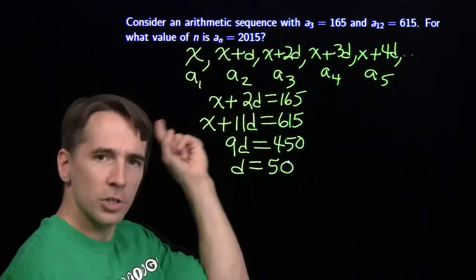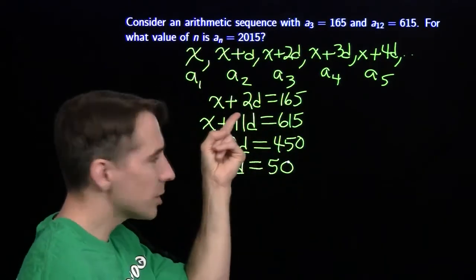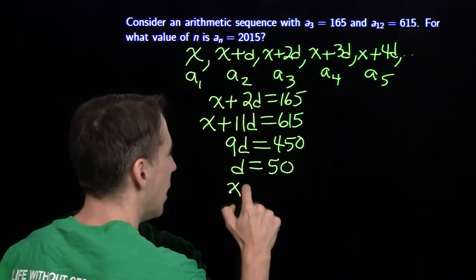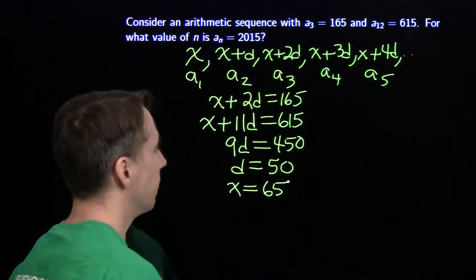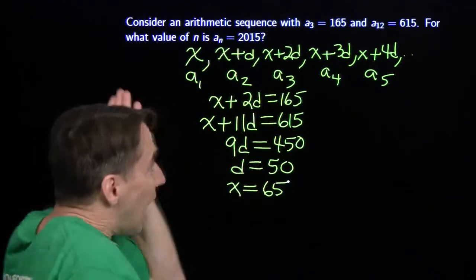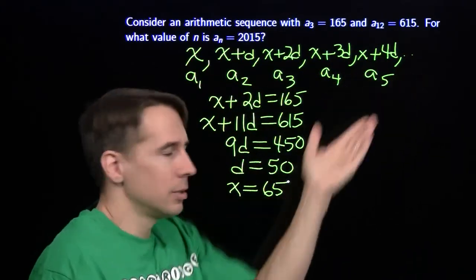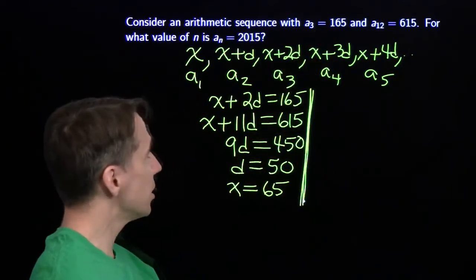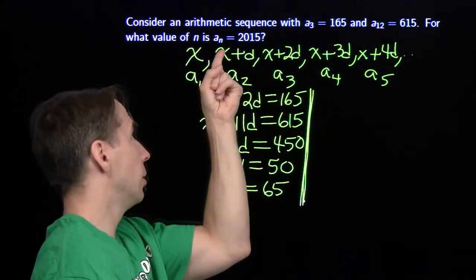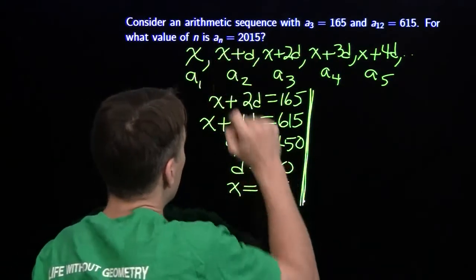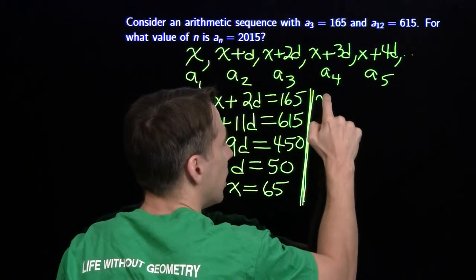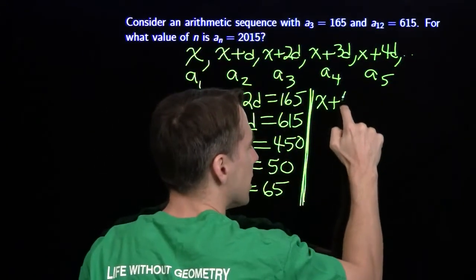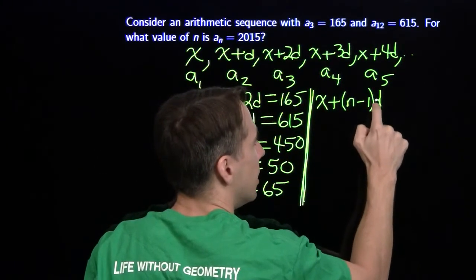I'll take d equals 50 and put it back into the first equation: x plus 100 equals 165. Subtract 100 from both sides, and x equals 65. Now that I know x and d, I know the sequence. It's time to find n. The nth term is x plus (n minus 1) times d, because we take n minus 1 steps to get to the nth term — not n steps.